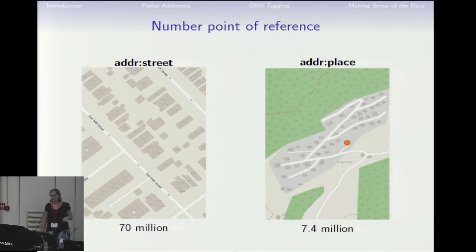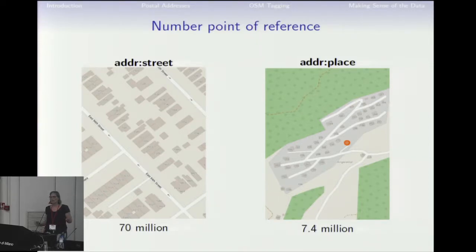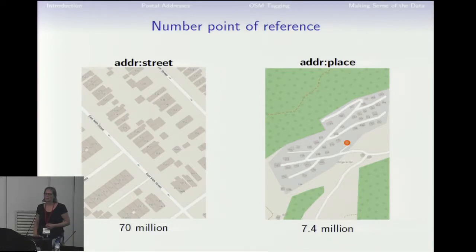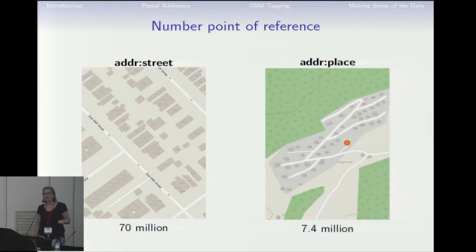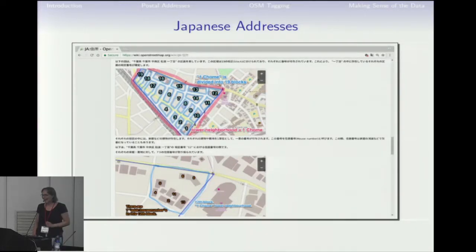The next question is what does the house number refer to? You find two tags: addr:street, your average street address, which most countries have — we have 70 million. And a couple of years ago, people started using addr:place, which is for villages that don't name house numbers after a single street but use one system for the entire village — we have 7.4 million of those. It seems these two addressing systems are enough to cover all usages in the world. One interesting finding is that Japan has its own block-based addressing system, going from block to quarter in your city. Unfortunately, it's all in Japanese, so it's really hard to implement.